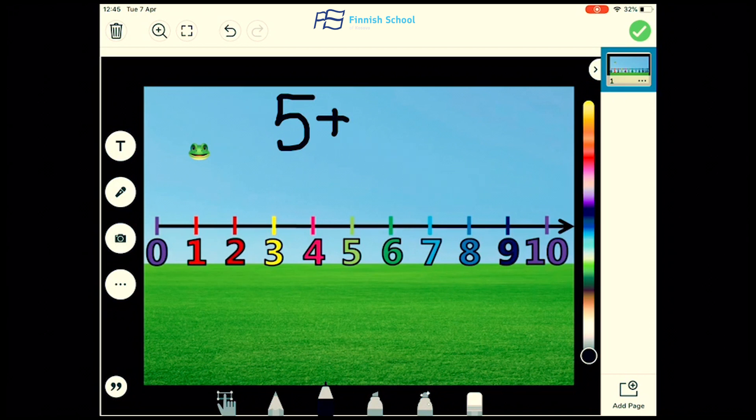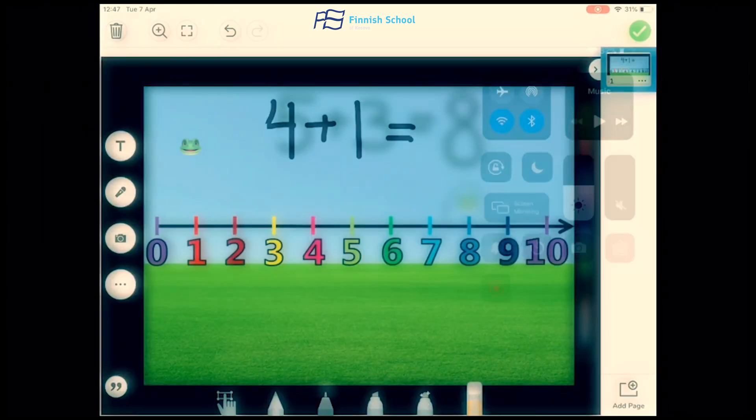Our next addition problem is 5 plus 3. To start this one, we remember that Froggy has to start on the first number, which is number 5. So Froggy is going to go to number 5 and have three big jumps: one, two, three. What number did Froggy land on? He landed on number 8, so 5 plus 3 equals 8.